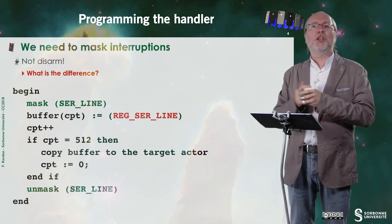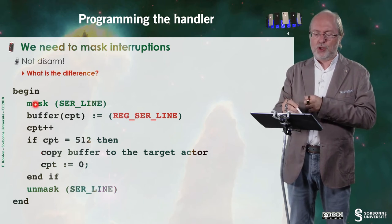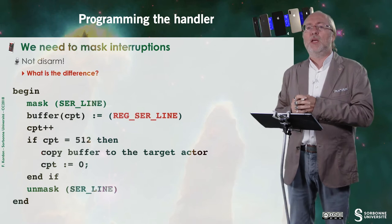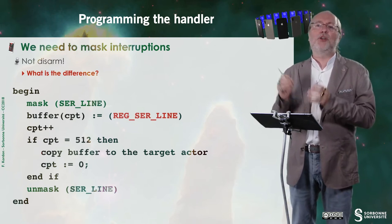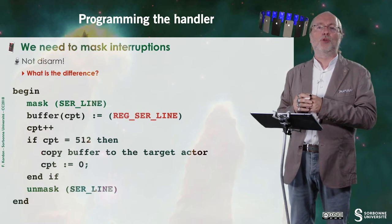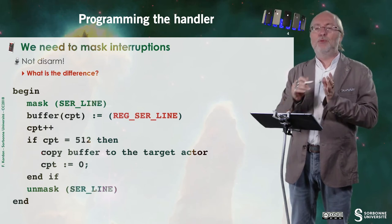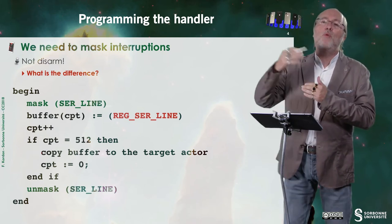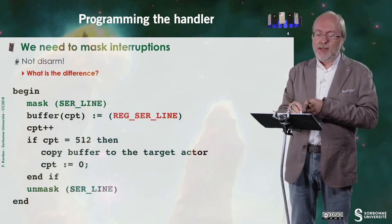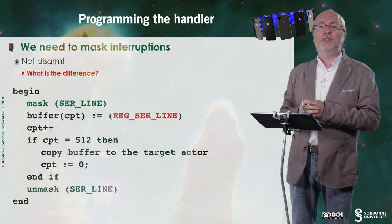Let's now program this handler. We will face this potential sharing problem, and we are in a situation where we want this portion of code to be executed safely. We don't want at least another serial line operation to occur here. We need to mask interruptions — this is a variant of the disarming mechanism. We usually disarm all the interruptions that have a lower priority than serial line, and this will ensure that if there is an interruption, it's a higher priority interruption — so you can do nothing, you have to follow it.